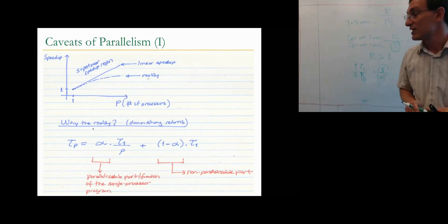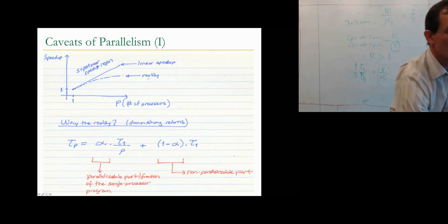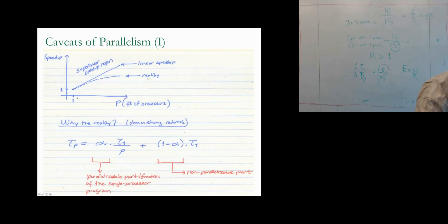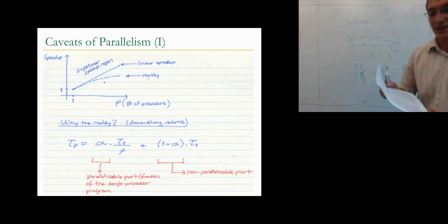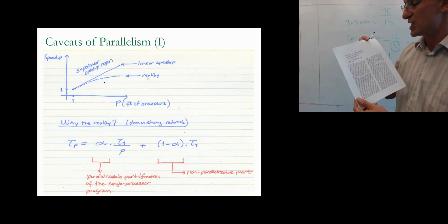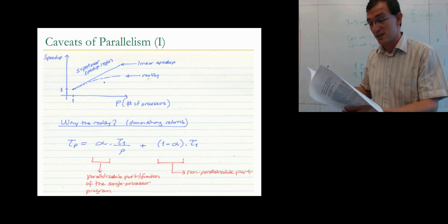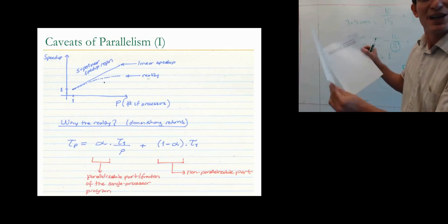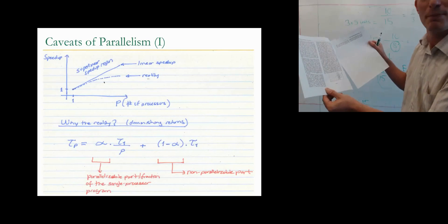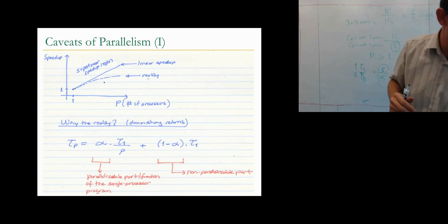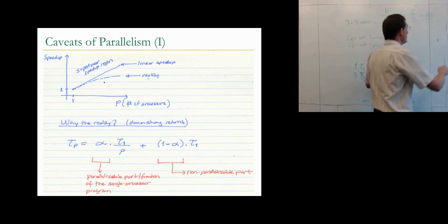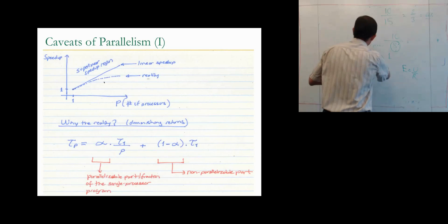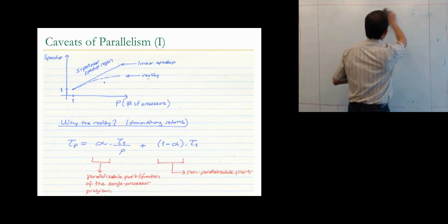Let's look at caveats of parallelism. Why do we have diminishing returns? Amdahl's law. I'd strongly encourage you to read Amdahl's paper, 'Validity of the Single Processor Approach to Achieving Large-Scale Computing Capabilities,' published in AFIPS 1967 — it's only about one page long. Amdahl's law says you can only parallelize the parallelizable portion of the program; the serial portion determines your overall speedup. Hence, you get diminishing returns.